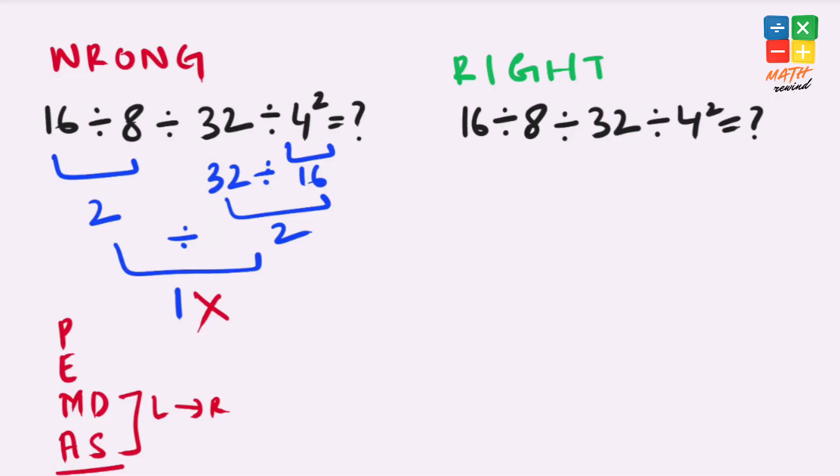Now let's rewind and solve this equation the right way. So in this equation we have division operator 3 times and we also have exponent. So according to the rules we must first solve exponents. So 4 to the power 2 equals 16.